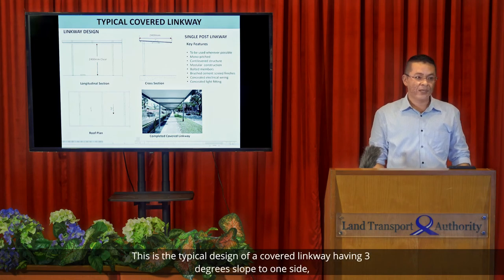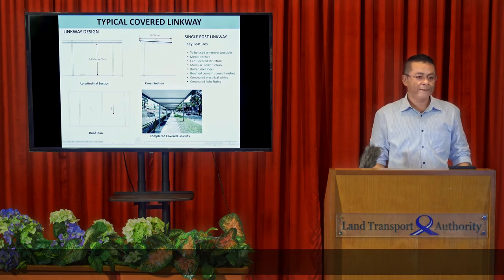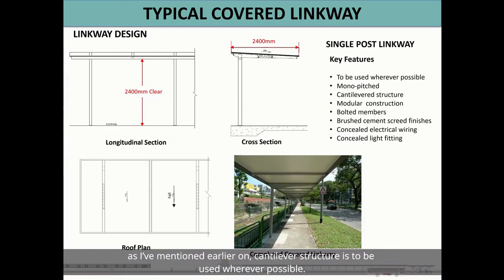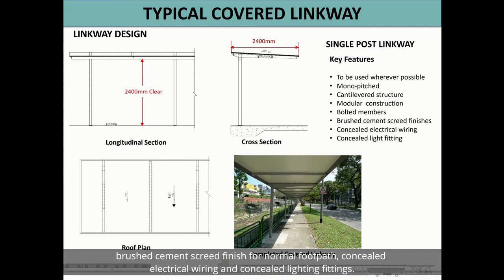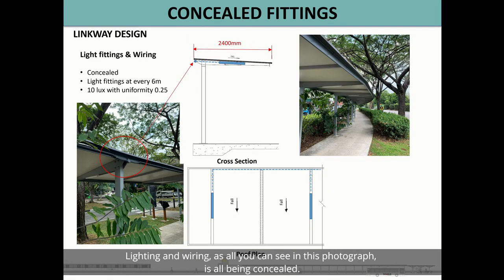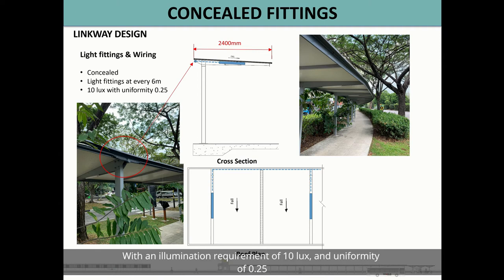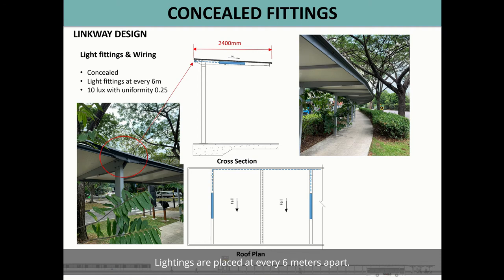This is a typical design of a covered Linkway with a 3-degree slope to one side. As mentioned, a cantilever structure is to be used wherever possible. It should be monopitch, modular construction, with bolted members, brushed cement screed finish for normal footpath, and concealed electrical wiring and concealed lighting fittings. The lighting requirement is 10 lux with a uniformity of 0.25, placed at every 6 metres apart.